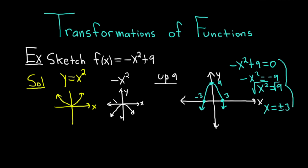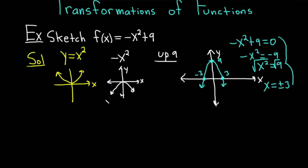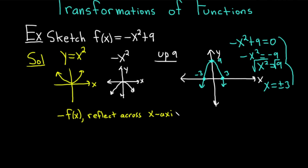We used a couple of things in this problem that you might not remember, so I'm just going to briefly refresh your memory. At the beginning we had y equals x squared, and I mentioned that if you have a negative sign in front of the x squared, it means you reflect it across the x-axis. In general, if you have a minus sign in front of your function, you reflect across the x-axis. And if you have a minus sign in front of the x, you reflect across the y-axis.